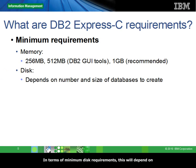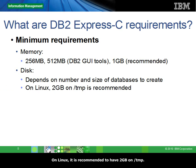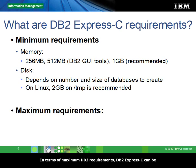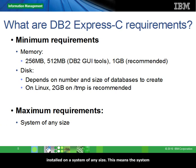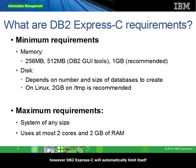In terms of minimum disk requirements, this will depend on the number of databases you plan to create and their sizes. On Linux, it is recommended to have 2 GB on /tmp. In terms of maximum DB2 requirements, DB2Express-C can be installed on a system of any size — for example, 16 CPU cores and 32 GB of RAM. However, DB2Express-C will automatically limit itself to use 2 cores and 2 GB of RAM.